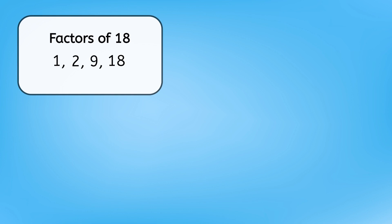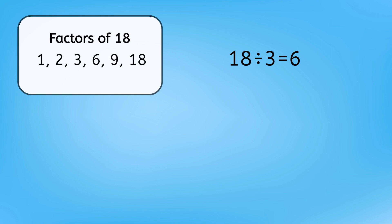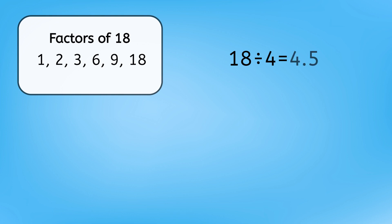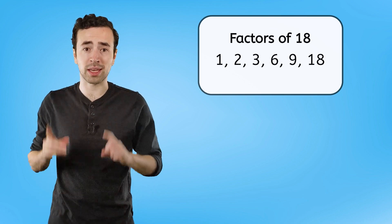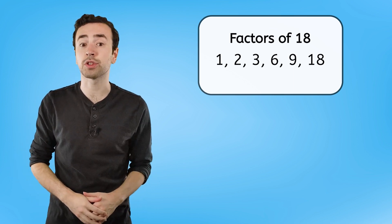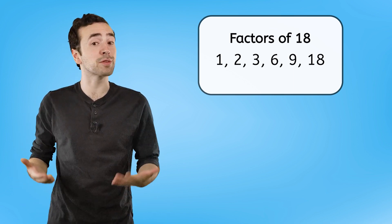Let's try this with 3. 18 divided by 3 is 6, a whole number, which means another factor pair. What about 4? 18 divided by 4 is 4.5. That's not a whole number, so 4 is not a factor of 18. We found all the number pairs that can multiply to equal 18, so we found all of 18's factors.